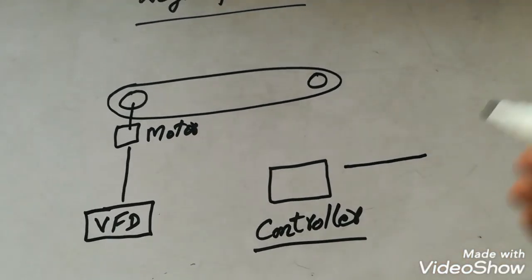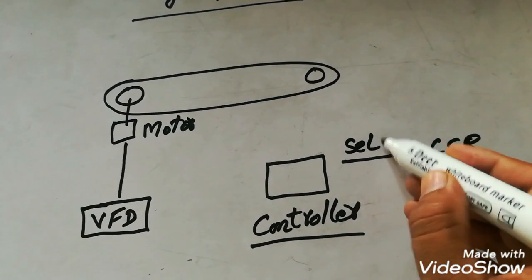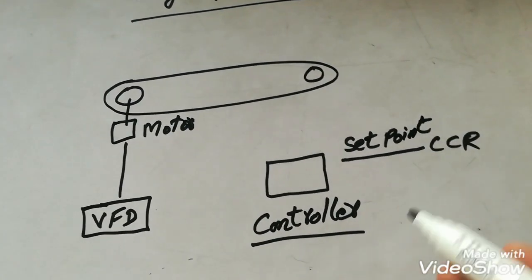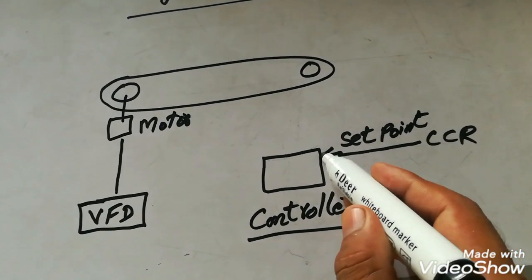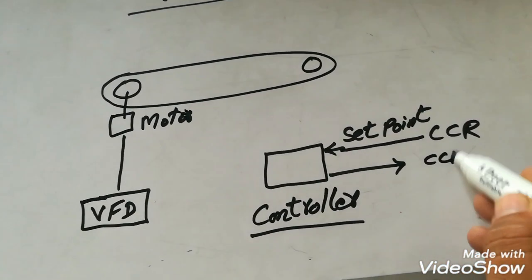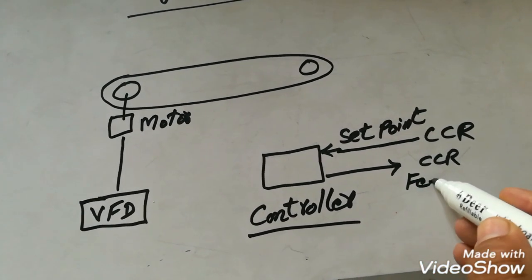We give the set point from the control room which is 4 to 20 mA, and this set point is the input of this controller.